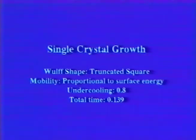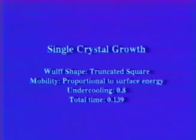We first show three examples in which the wolf shape is a truncated square and the undercooling is varied. Color variation indicates the temperature variation. Red is warm and blue is cold. Note the parabolic tips and dense side branching.